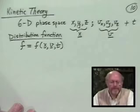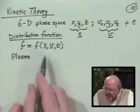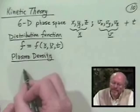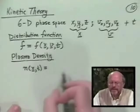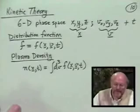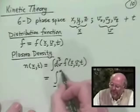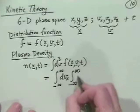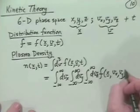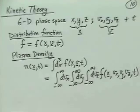If we have that distribution function, how do we obtain the plasma density? We eliminate the three velocity variables by integrating: the density, still a function of x and t, is the integral over all velocity space of f(x, v, t). Explicitly, that's a triple integral over dvx dvy dvz of f(x, vx, vy, vz, t) — a somewhat ugly triple integral.